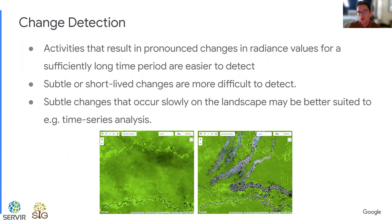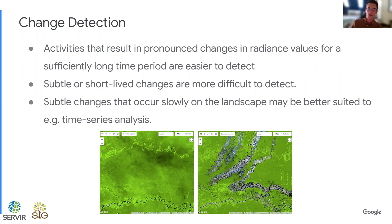Activities that result in pronounced changes in image values for a sufficiently long time period are easier to detect. The change is easier to detect if it occurs abruptly and remains observable for a longer period after the event. A good example is this before-and-after image of illegal gold mining activity in Peru. The gold mining activity is not going to reverse within 30 days to show the landscape as it was before, so it persists long enough for us to identify and quantify the change. There are two different ways that the temporal aspects of change detection can be a challenge.